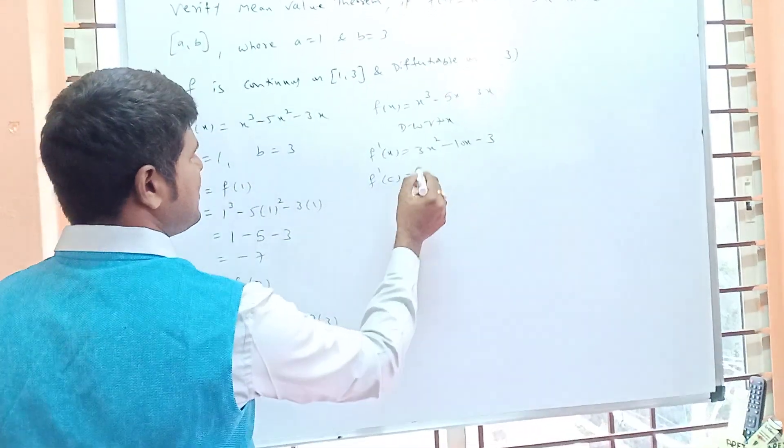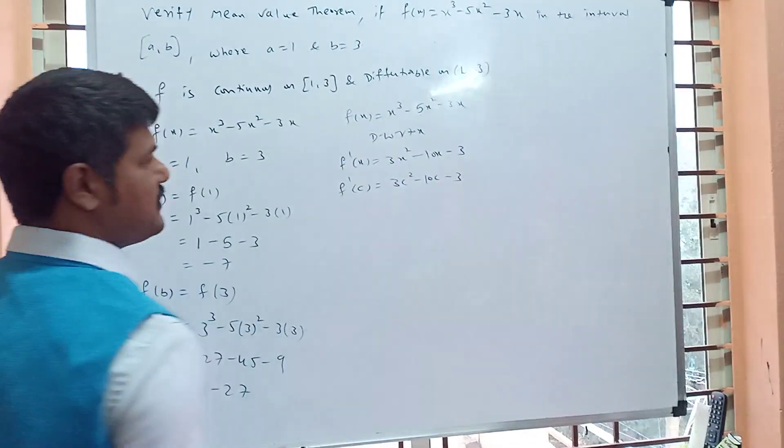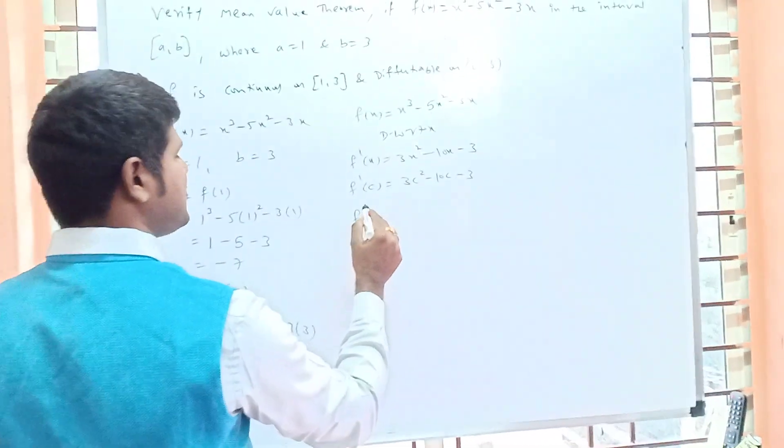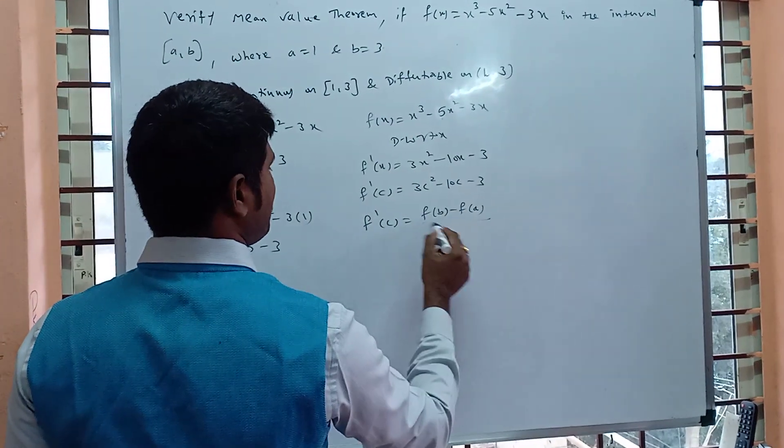Find f'(c). In place of x substitute c: 3c² - 10c - 3. We have one formula in mean value theorem: f'(c) = [f(b) - f(a)]/(b - a).